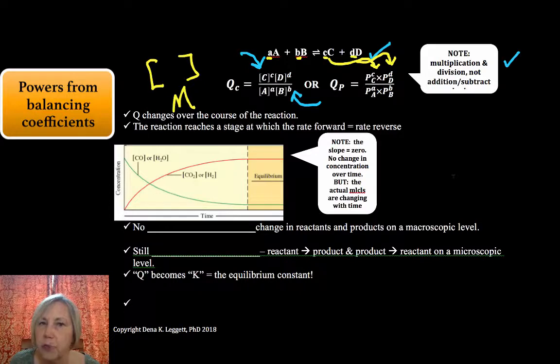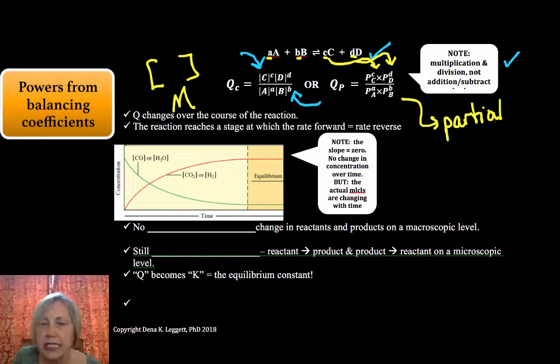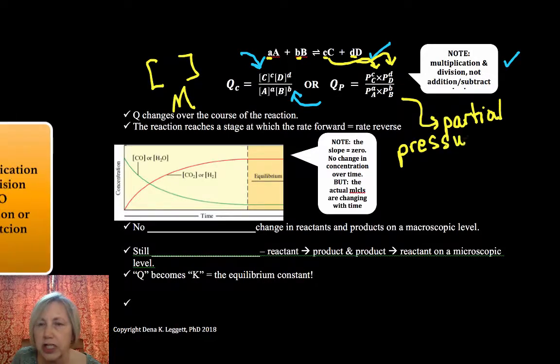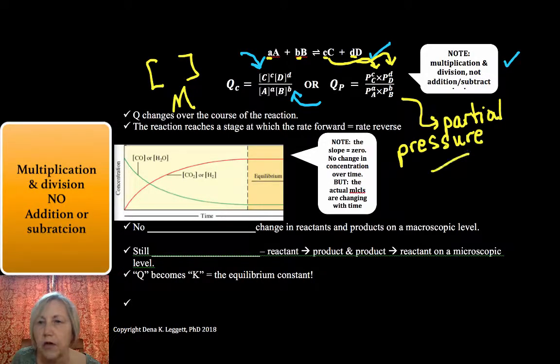And you would either see moles per liter or partial pressures. And I'll give you a heads up. If the question is asking about partial pressures, a reaction and all the data is in partial pressure and you use brackets indicating molarity, you have not effectively communicated and you will get points taken off.